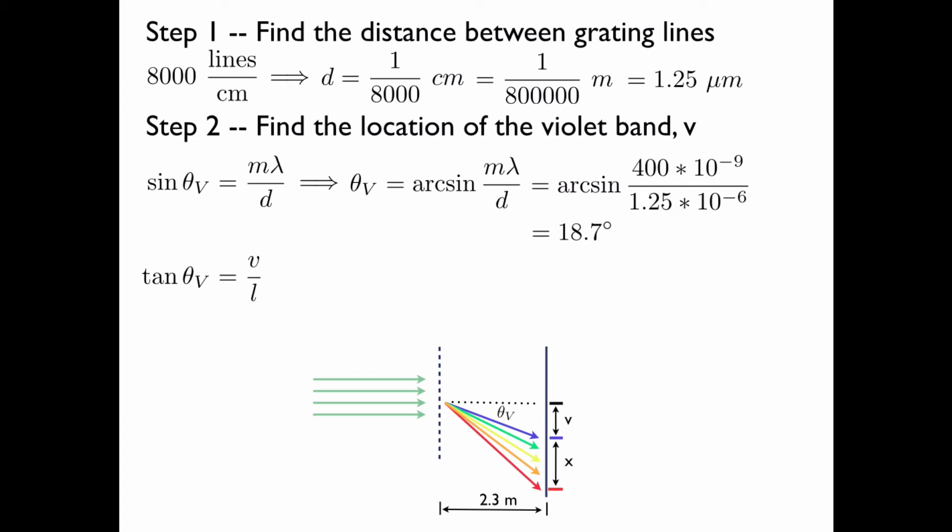where L is the distance from the grating to the screen. In this case, 2.3 meters. So V is L tan theta, which is 0.77 meters.